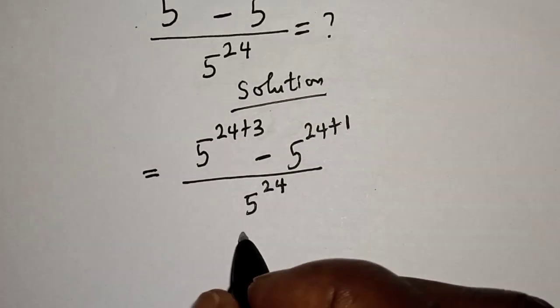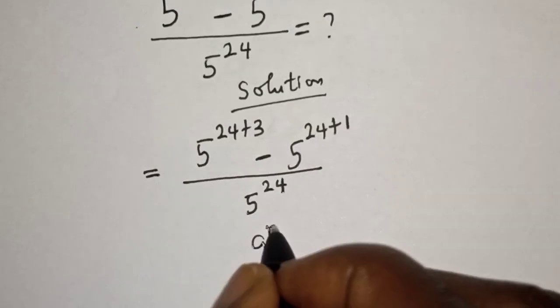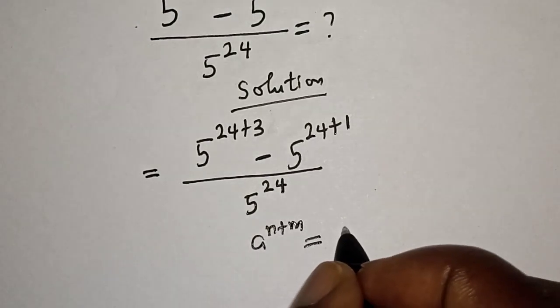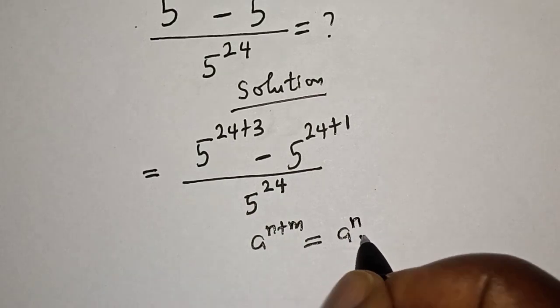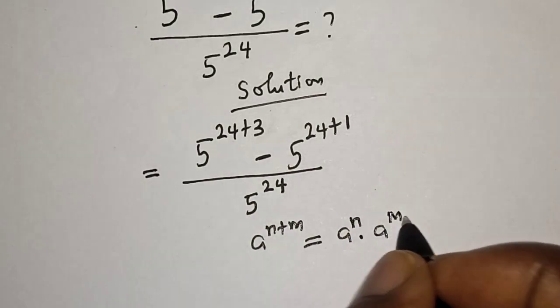Now take note of this rule that A raised to power N plus M is equal to A raised to power N multiplied by A raised to power M.